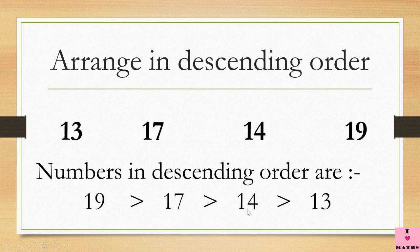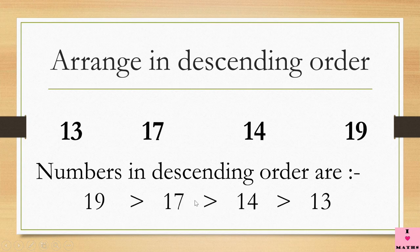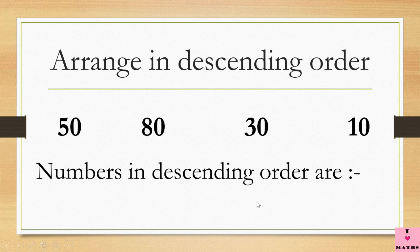So the numbers in descending order are 19, 17, 14, and 13. Again look at this sign — the mouth is open towards the number which is bigger. 19 is bigger than 17 so the mouth is open towards 19. 17 is bigger than 14 so the mouth is open towards 17. Now we have one more set of numbers to arrange in descending order — descending order means big to small.